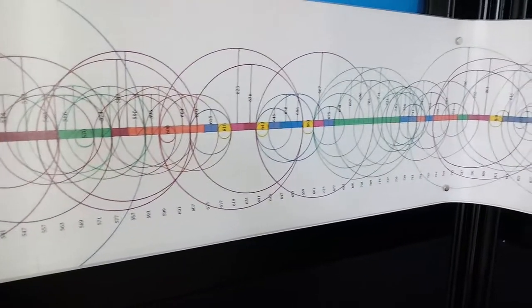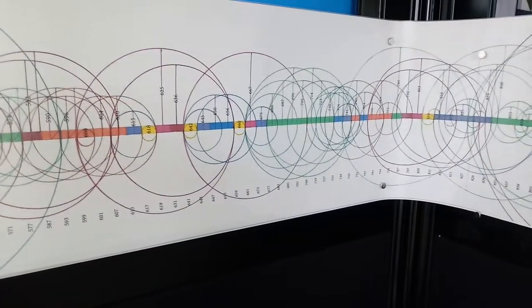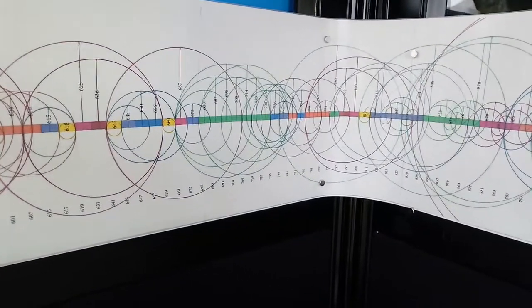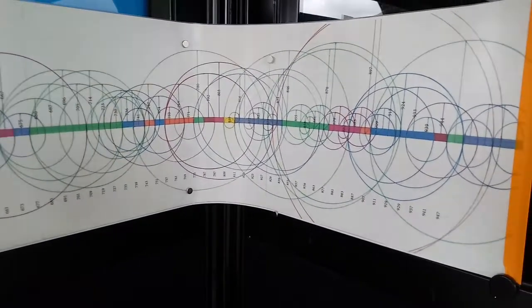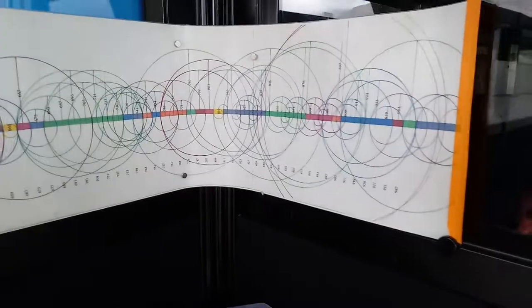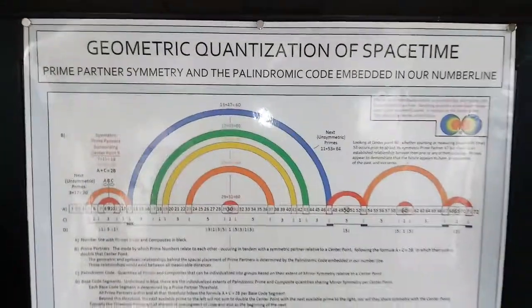Mathematically, what it shows is that prime numbers are not only not random, that they're highly ordered, bound by algebra, and create these geometries within our number line. I'll also go into this aspect of it.